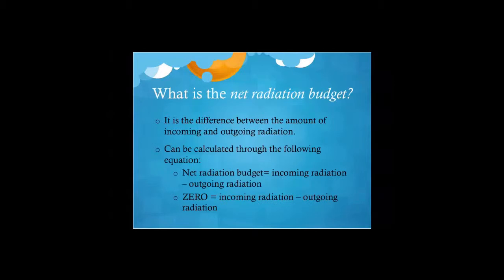What is the net radiation budget? The net radiation budget is the difference between the amount of incoming and outgoing radiation. This can be calculated through the following equation: net radiation budget equals the incoming radiation subtracted from the outgoing radiation. This equation should always result in an amount of zero in order to have a balanced net radiation budget.